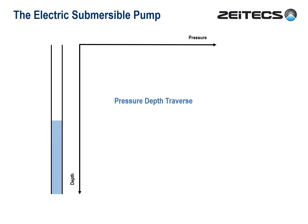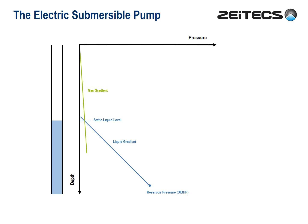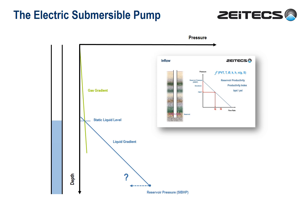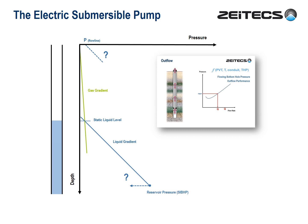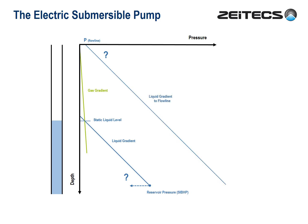Now let's look at this from a totally different perspective — a plot of pressure versus depth, often referred to as a pressure-depth traverse. Depicted here is a dead well with a deep static fluid level. The reservoir pressure, or shut-in bottom hole pressure, is insufficient to support a liquid column to surface, let alone produce at an economic rate. The static liquid level is determined by the intersection of the fluid gradient up from the reservoir and the gas gradient down from surface. There are two things we must do to make this well flow. Firstly, we must draw down the reservoir — reduce the bottom hole pressure — so the reservoir delivers fluid according to its productivity index. Secondly, we must match the flow line pressure at surface, otherwise the fluids will not unload.